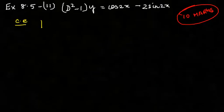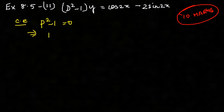The characteristic equation is p squared minus 1 equals 0, which implies p squared equals 1. Therefore, p equals root of 1, which is plus or minus 1.